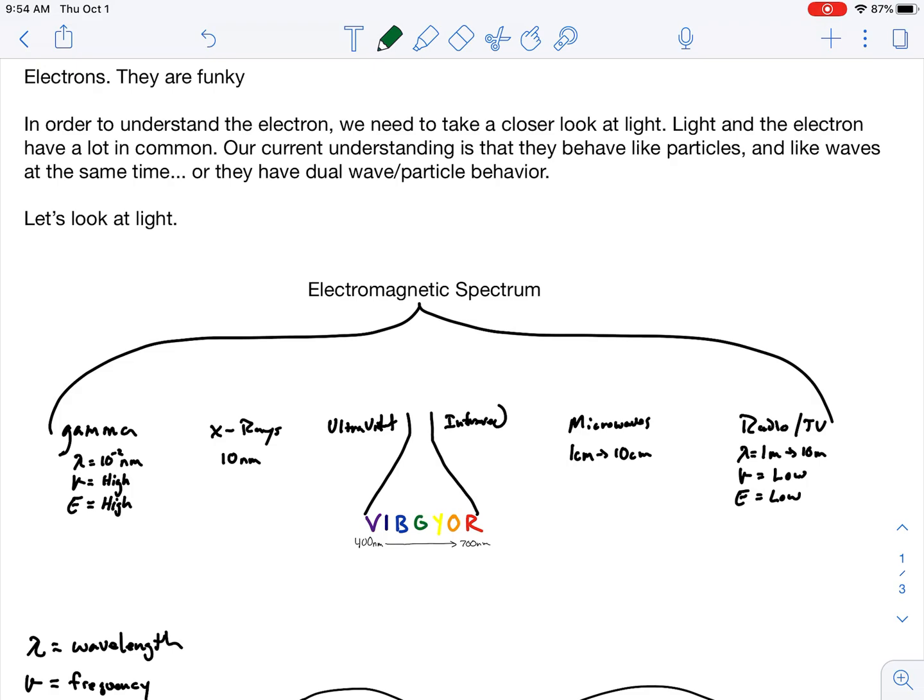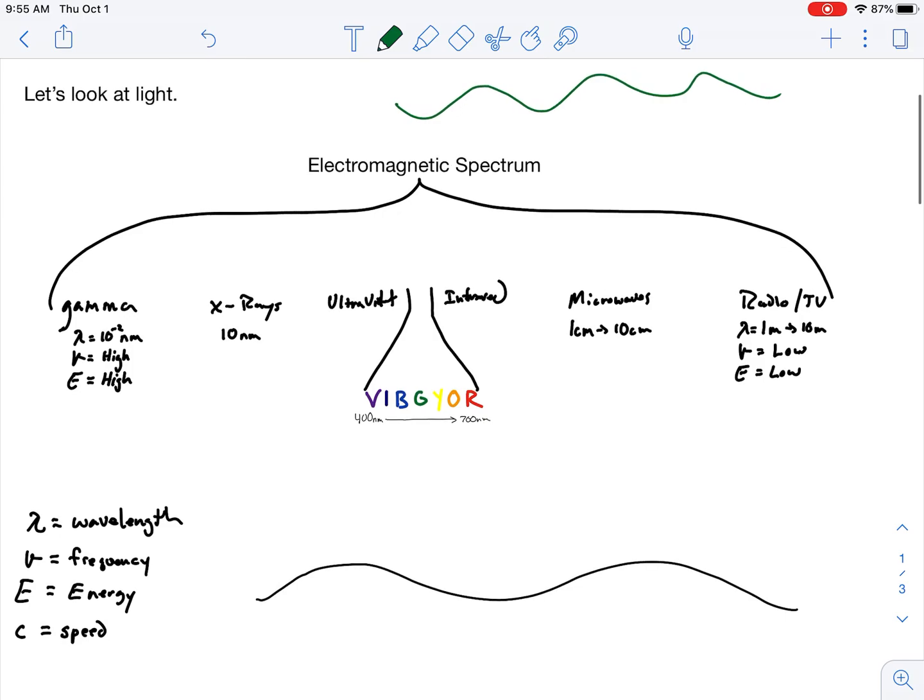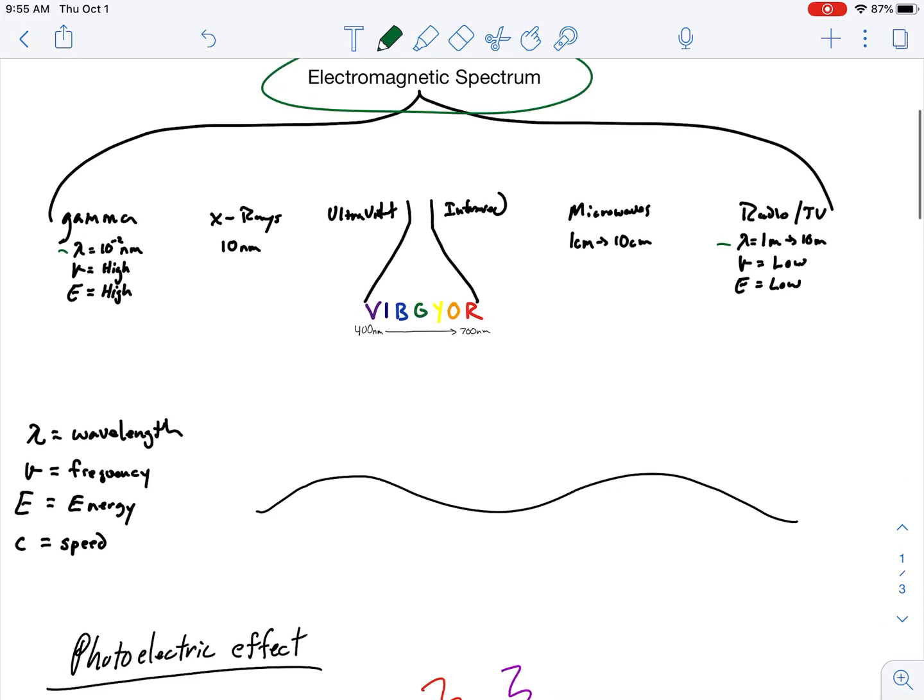So our current understanding of light is that light is a wave. However, light is only a small part of the electromagnetic spectrum that's blasted off the sun. Out of the sun we have gamma rays, x-rays, ultraviolet, infrared, microwaves, radio waves. We have this huge gambit of different types of electromagnetic radiation. They change from very short wavelengths to very long wavelengths.